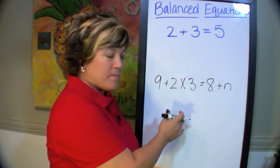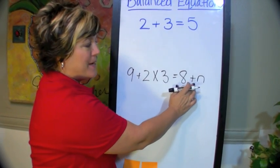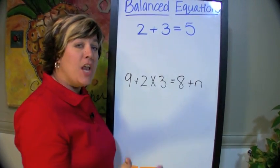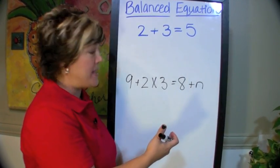Here's an equation. We have 9 plus 2 times 3 equals 8 plus n. Now n represents a variable. It's an unknown. We don't know what number that is, so we've simply substituted a letter in that spot.